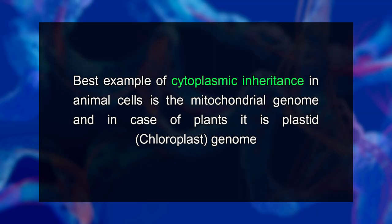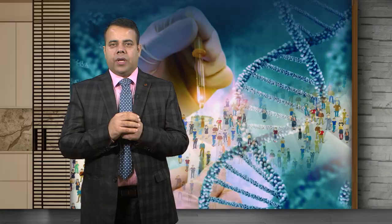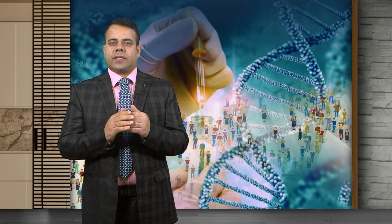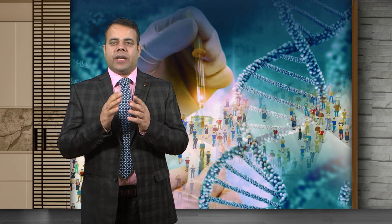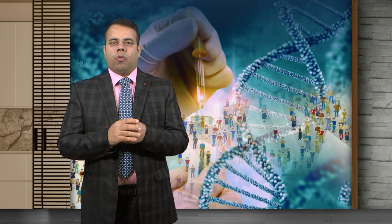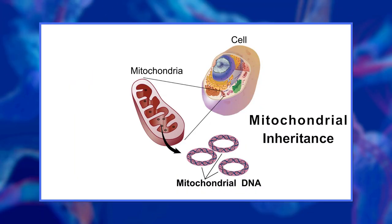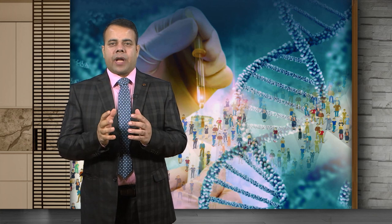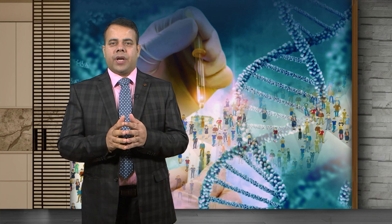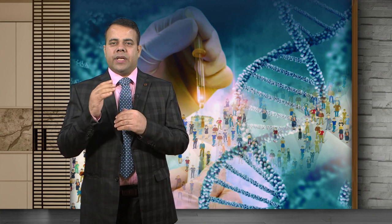The best example of cytoplasmic inheritance in animal cells is the mitochondrial genome, and in case of plants, it is the plastid — that is the chloroplast genome. The presence of DNA in chloroplasts in plant cells was first demonstrated in 1962 by Ris and Plaut, while a year later in 1963, the presence of DNA in mitochondria was proved by Margaret M.K. Nass and her co-workers. Further observations by several scientists have been reported about the critical role of cytoplasm in genetics.